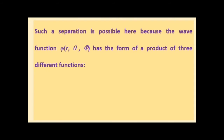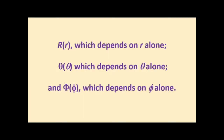Such a separation is possible because the wave function psi(R, theta, phi) has the form of a product of three wave functions. In the three coordinates of spherical polar coordinates, the wave function is the product of three functions: capital R of small r, which depends on the radial distance alone — that is, the radial distance which represents the position of the electron.